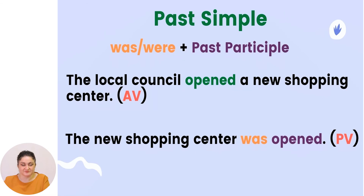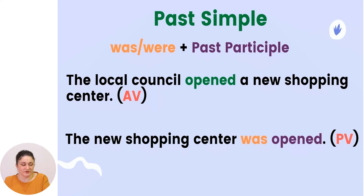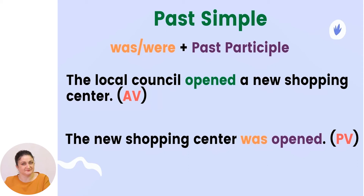Past simple. To transform past simple into passive voice, you have to use the verb 'to be' in the past tense — forms 'was' and 'were' — plus the past participle of the verb. The past participle means the third form of the irregular verb or the regular ones. Example: 'The local council opened a new shopping center.' becomes 'The new shopping center was opened.' The shopping center suffered the action of being opened.